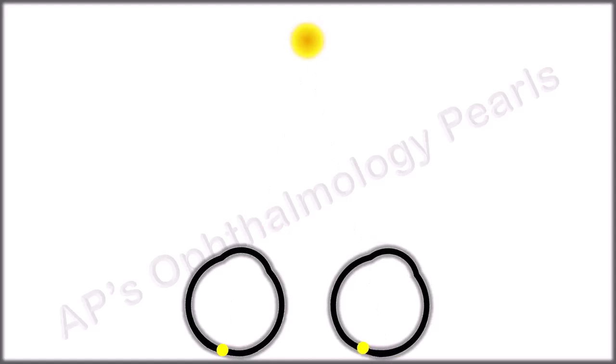If there is a deviation, the image falls on an extra foveal point of the deviated eye, thus producing diplopia.